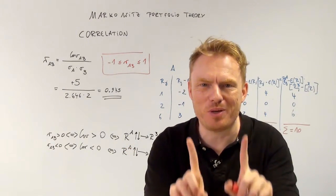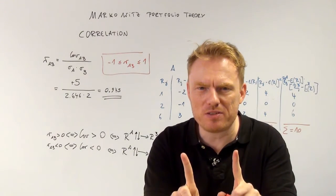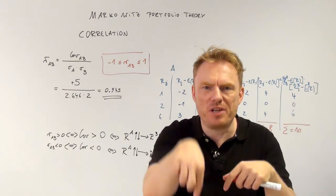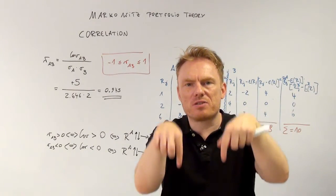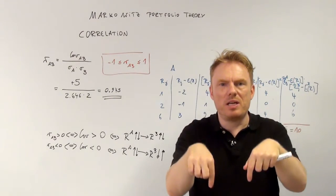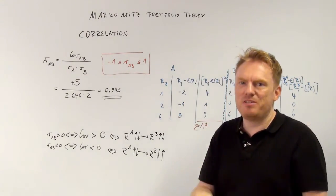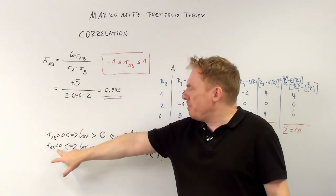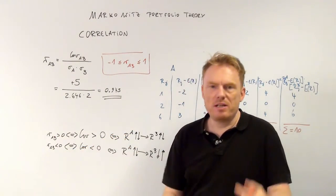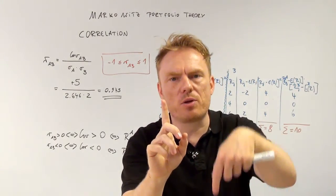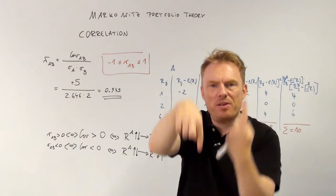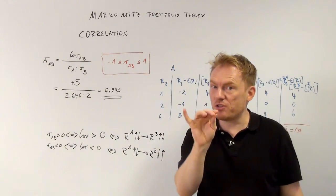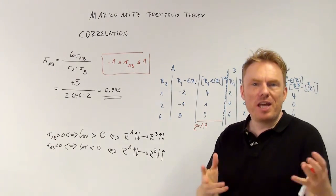Correlation superior to 0 means: if one thing rises, so does the other; and if one thing goes down, so does the other. The opposite holds true if the correlation is strictly inferior to 0: then one thing goes up and the other goes down, or if one goes down the other goes up. That's important for you to understand about the correlation coefficient. Thank you for watching.